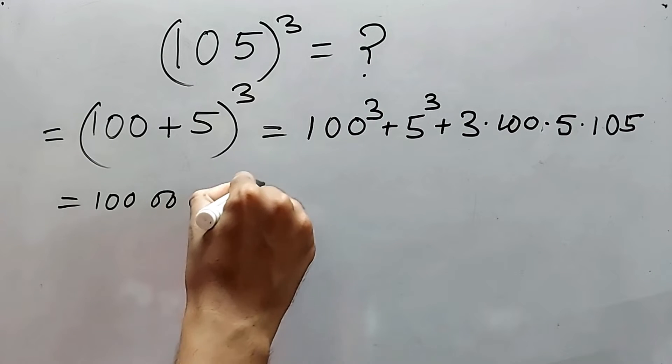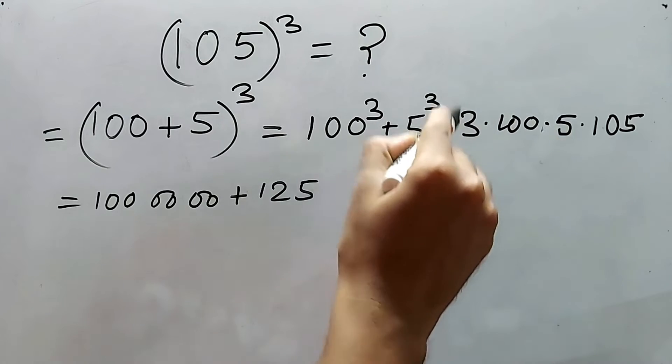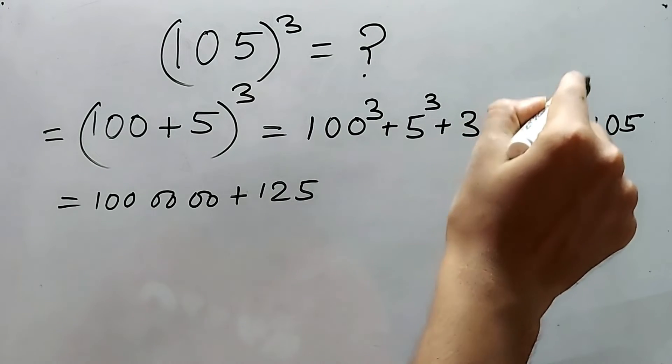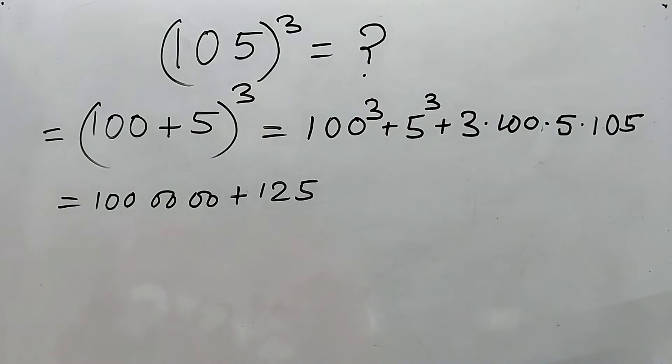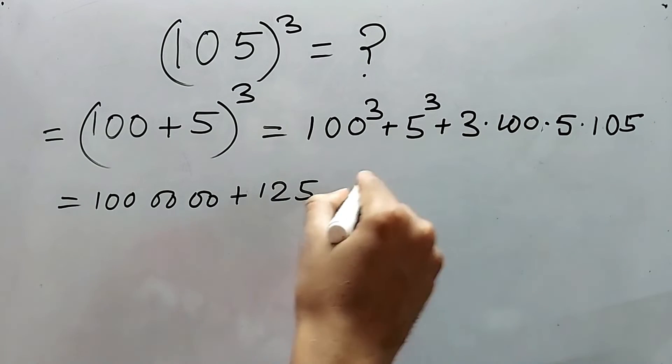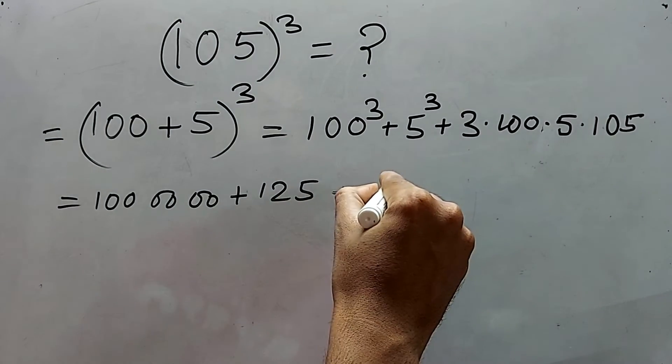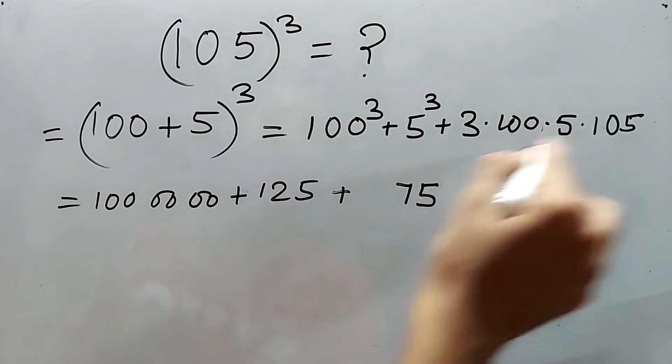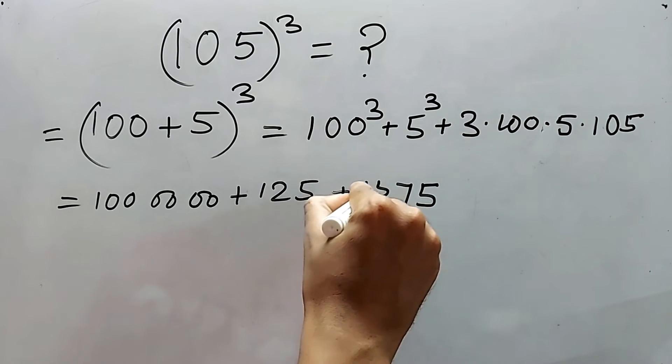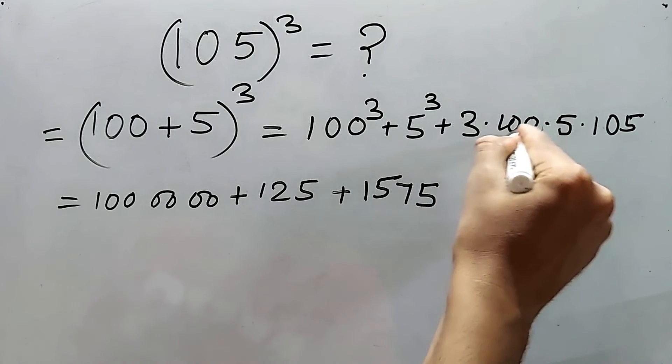And 3 into 5 is 15. 15 into 5 is 75. How? 15 into 5 is 75, there is a zero so definitely we can write 75 and 15 ones are 15, that's why 1575 and double zero for this hundred.